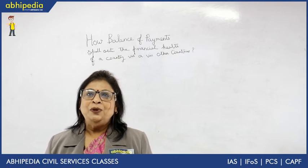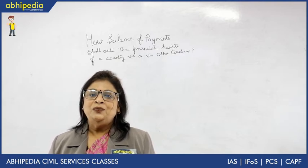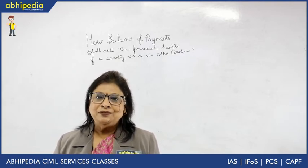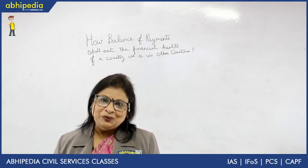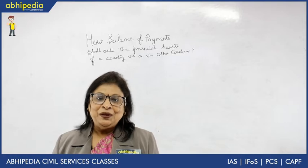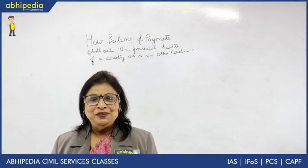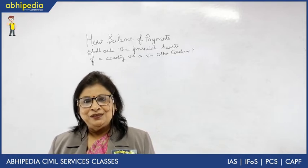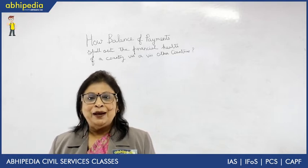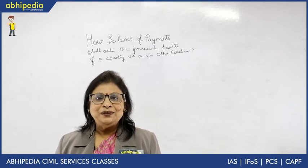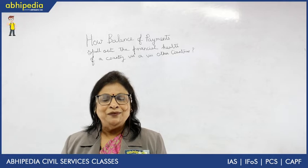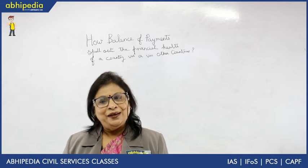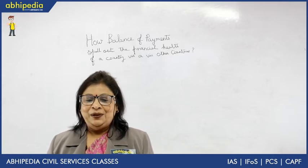Balance of payment speaks about visible items — visible items are goods — invisible items — invisible items are services — and capital transfer, that is capital inflows and capital outflows.